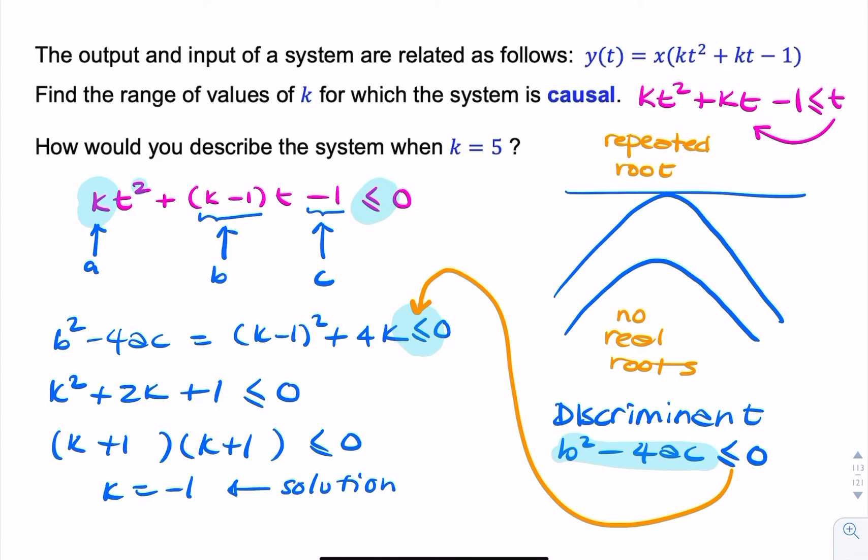So, the only value that will make this inequality hold, that will make the system causal, is k equals minus 1. The question asked for a range of values, but we found a single value, k equals minus 1.